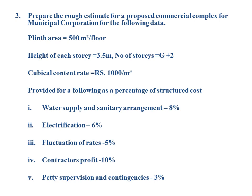Numerical number 3: Prepare the rough estimate for a proposed commercial complex for the municipal corporation from the following data. Plinth area is 500 meter square per floor, height of each story is 3.5 meter, number of stories is G plus 2 (ground plus 2 floors), cubical content rate is rupees 1,000 per meter cube. Provisions as percentage of structural cost: water supply and sanitary arrangement 8%, electrification 6%, fluctuation of rates 5%, contractor's profit 10%, PT supervision and contingencies 3%.